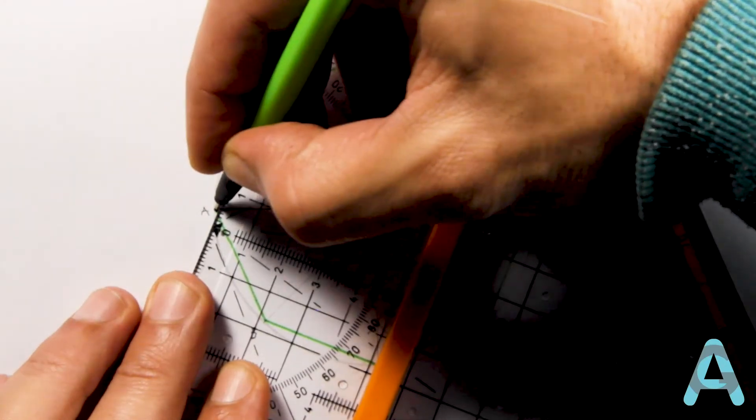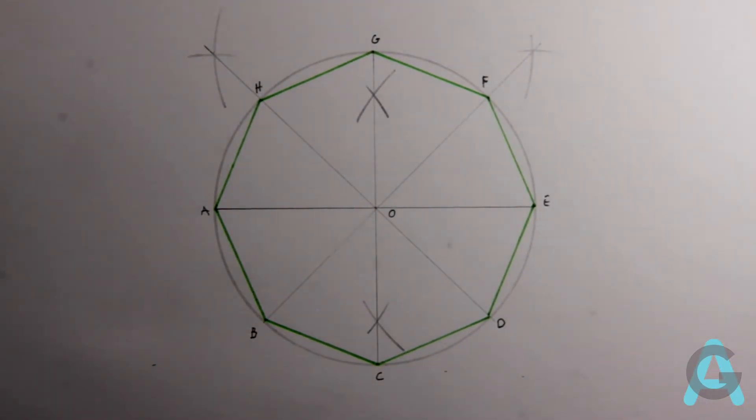And there it is, our octagon inscribed in a circle, or the division of the circle in eight equal parts.